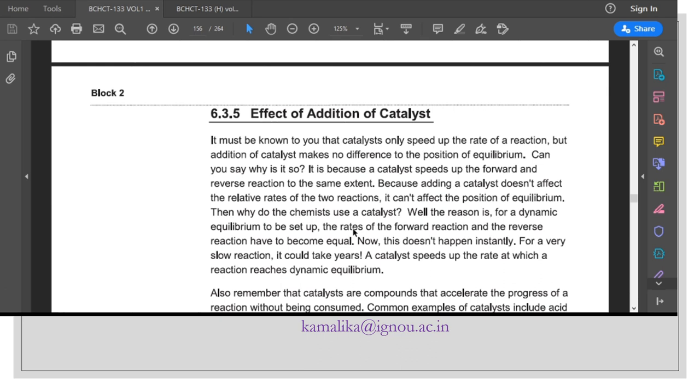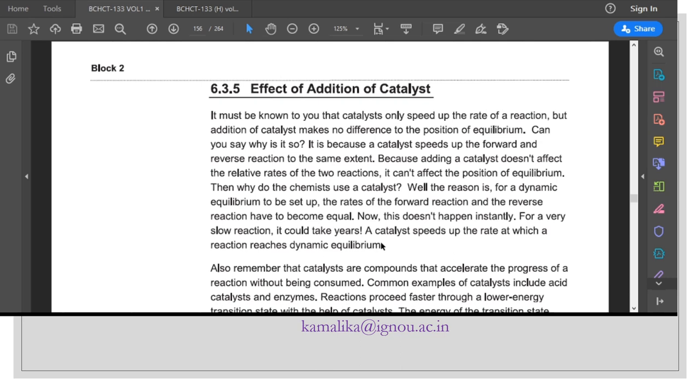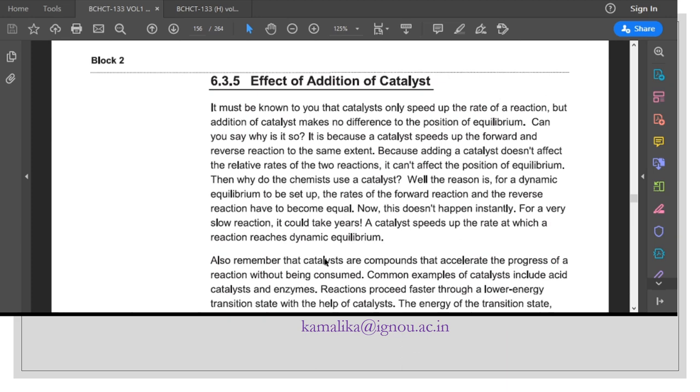So why do chemists use catalysts? For the dynamic equilibrium to be set up, the rates of the forward and reverse reactions have to become equal. Now for a very slow reaction, it could take years. A catalyst speeds up the rate at which the reaction reaches dynamic equilibrium.